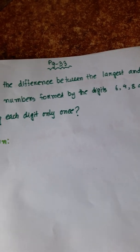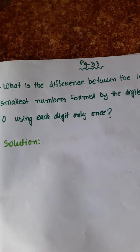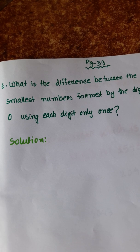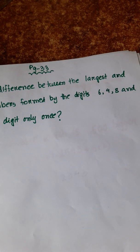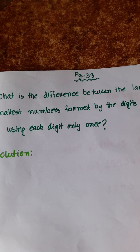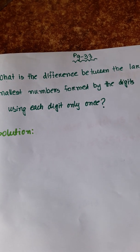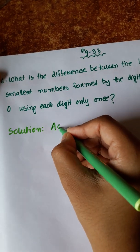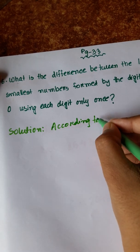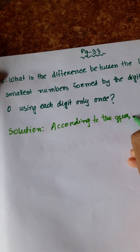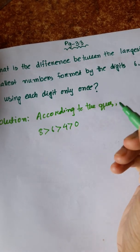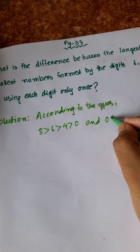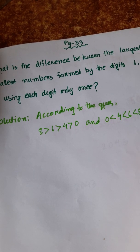Now the next math, number 6. Question is: What is the difference between the largest and smallest numbers formed by the digits 6, 4, 8, and 0, using each digit only once? According to the question, 8 is greater than 6 is greater than 4 is greater than 0, and 0 is smaller than 4 is smaller than 6 is smaller than 8.